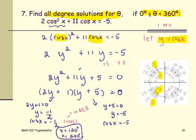For the second equation, cosine is negative 5. Recall the cosine function, it has to be between negative 1 and positive 1. So negative 5 is out of the range. That tells us no solution for the second equation.